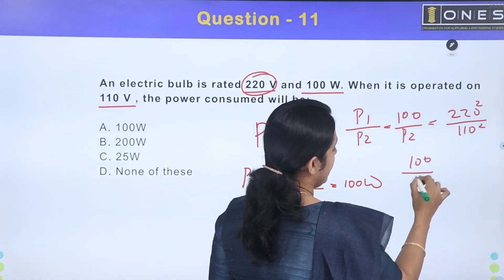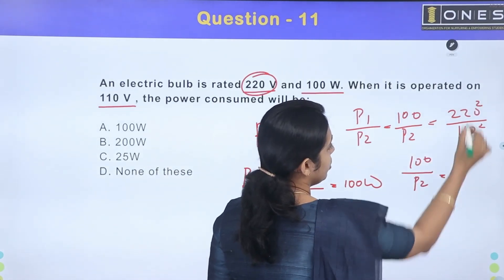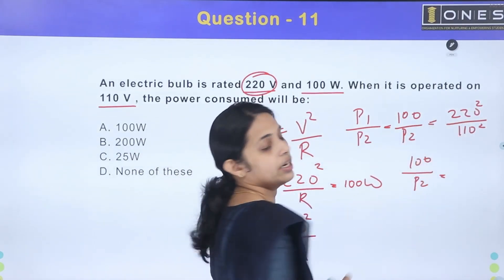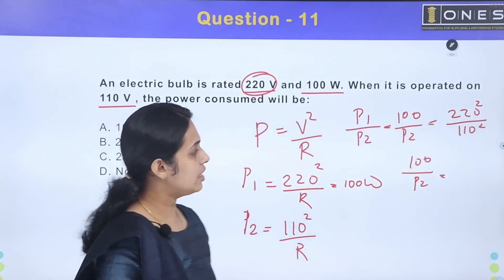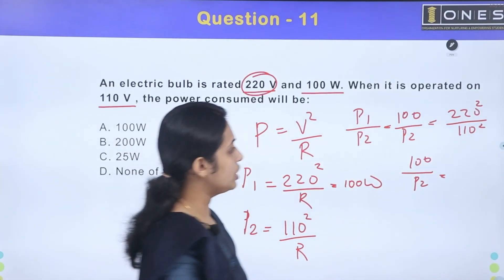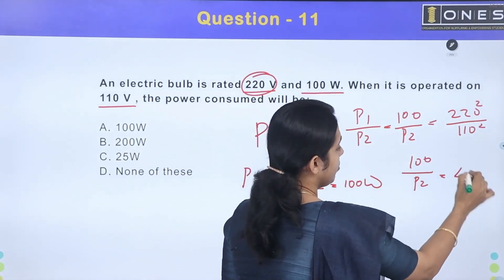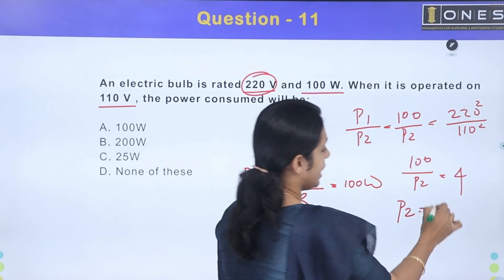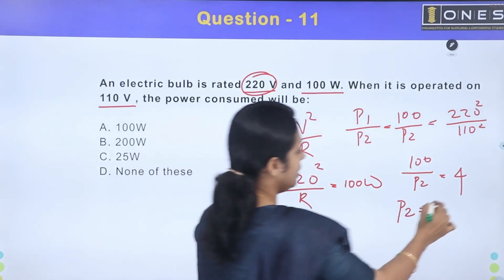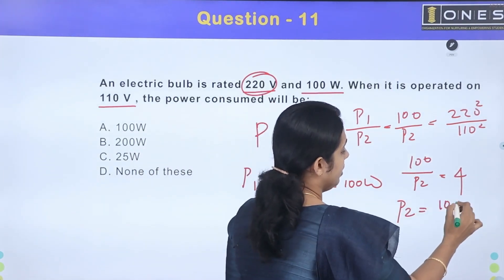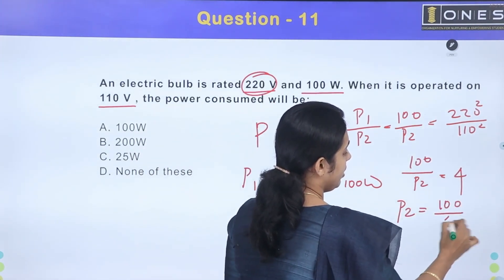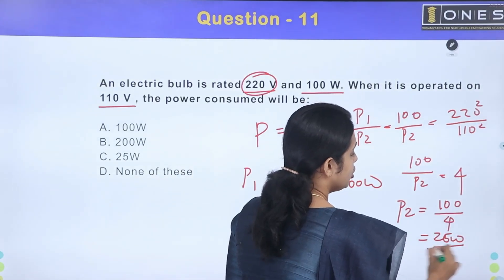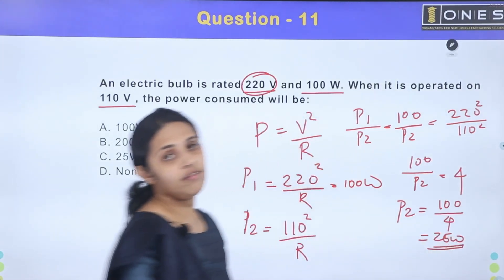So 100 divided by P2 equals 220² over 110². If the voltage changes by a factor of one-half, the power changes by a factor of one-fourth. So P2 equals 25 watts. The answer is 25 watts.